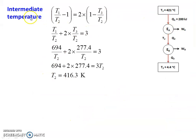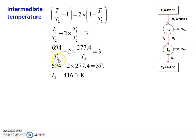Rearranging the equation: T1/T2 minus 1 equal to 2 times of (1 minus T3/T2). Expanding: T1/T2 plus 2 times T3/T2 equal to 3. Substituting values: 694 divided by T2 plus 2 into 277.4 divided by T2 equal to 3. Taking common denominator T2: 694 plus 2 times 277.4 equal to 3 times T2. Solving this equation, T2 equal to 416.3 Kelvin. So the intermediate temperature is 416.3 Kelvin.